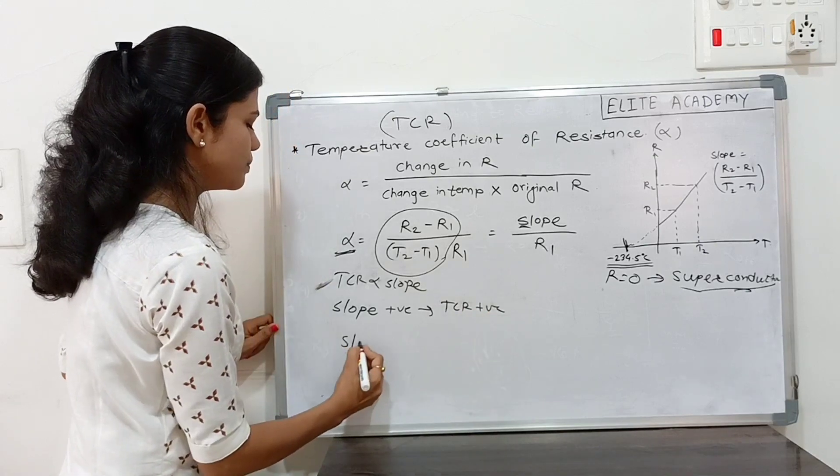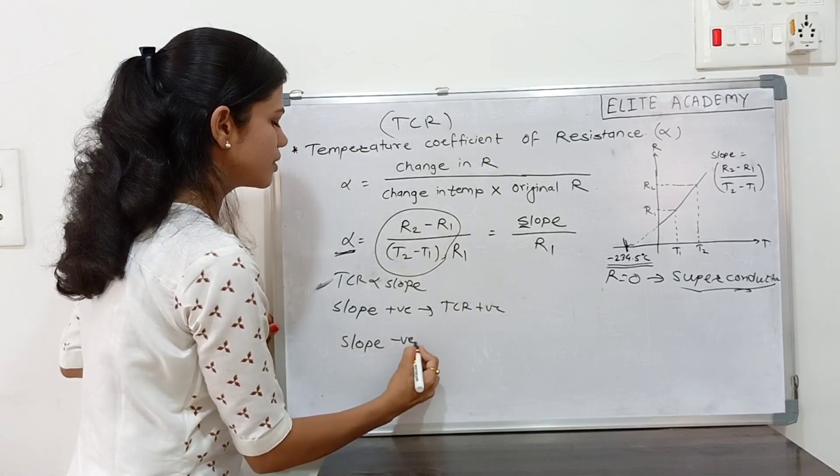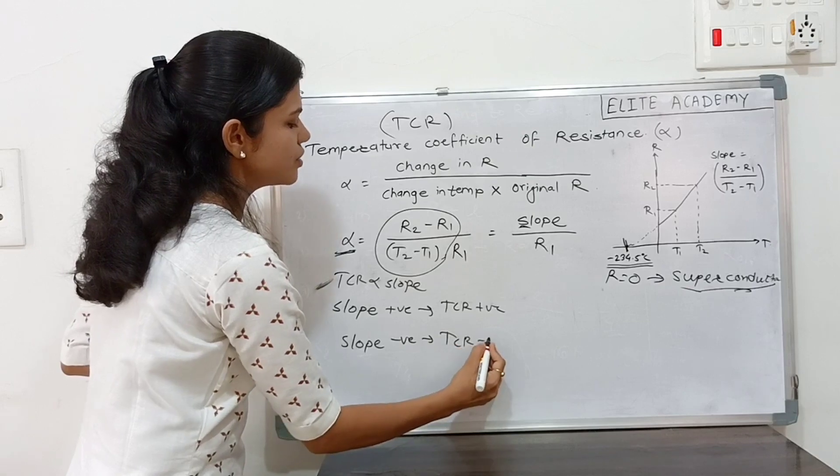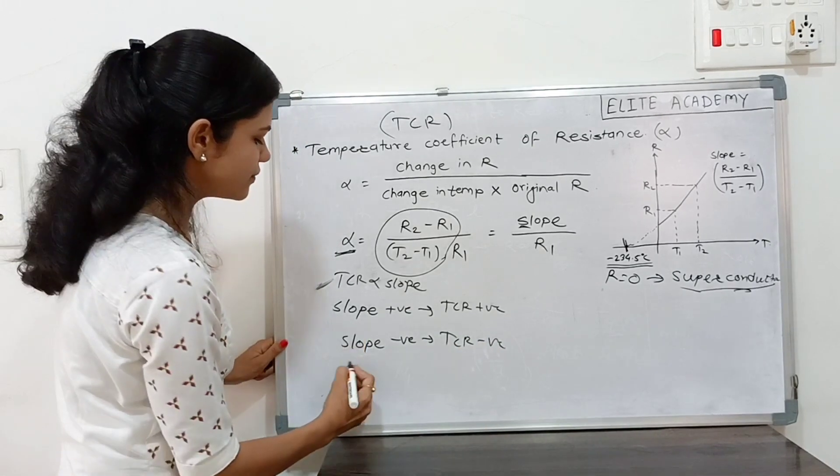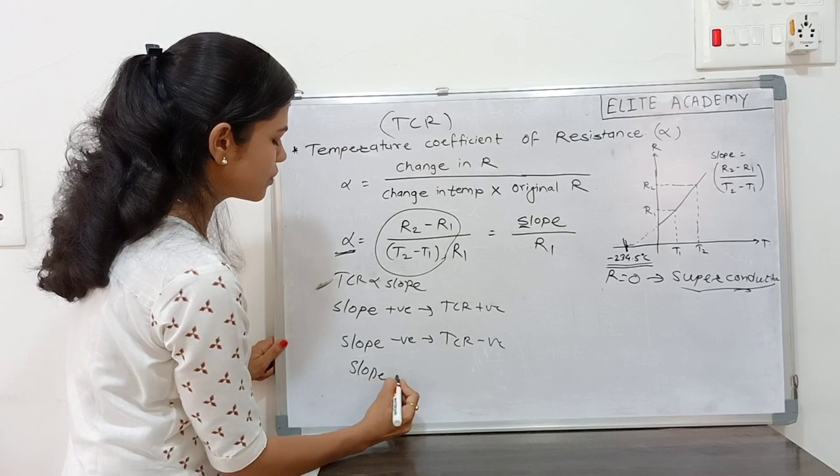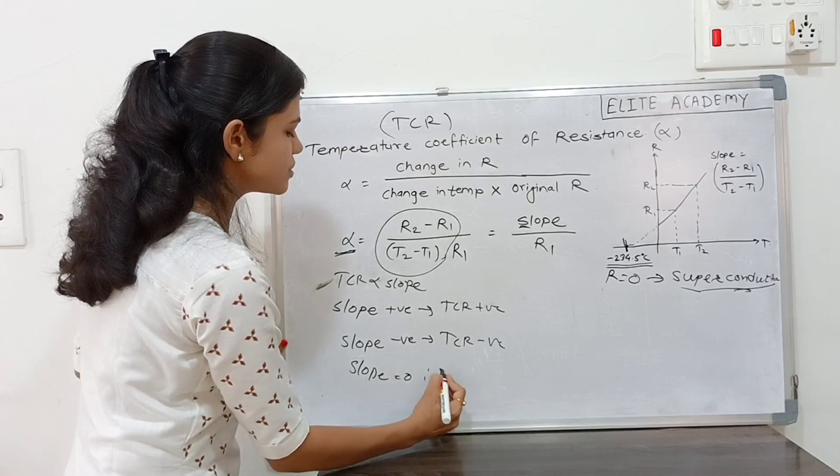If slope is negative, TCR is also negative.